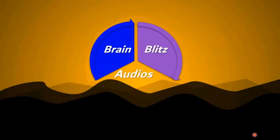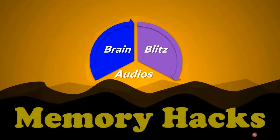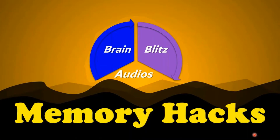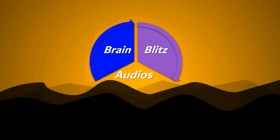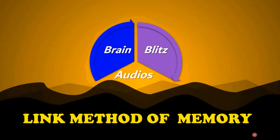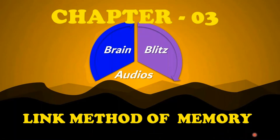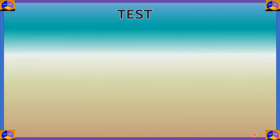Hello everyone, welcome to Brain Blitz Audios. In today's episode of Memory Hacks, we'll be dealing with a very important chapter. This chapter is very helpful if you want to remember shopping lists, speeches, etc. The chapter is the Link Method of Memory, and this is our third chapter. This Link Method would help us in remembering a lot of stuff and it's very effective.